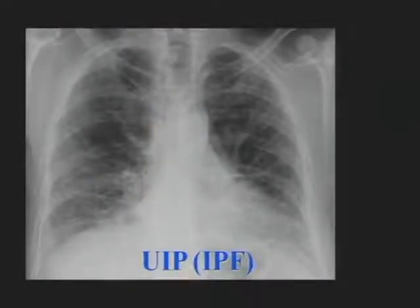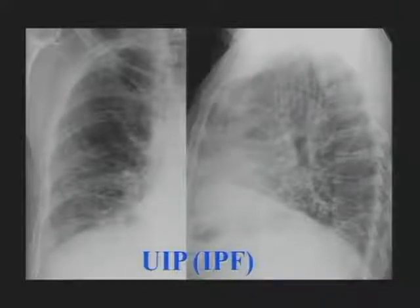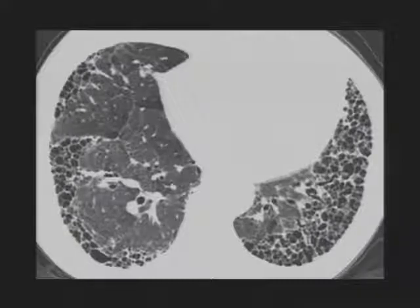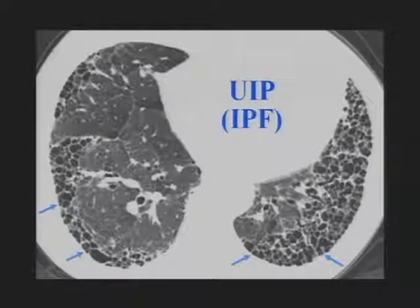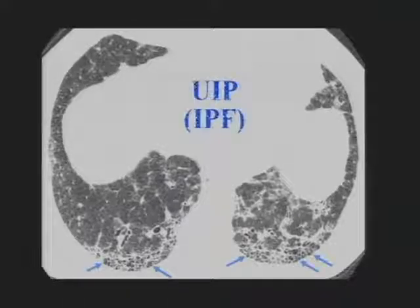This is the plain film appearance of UIP-IPF: decreased lung volumes, small-looking lungs, and increased reticular opacities at the lung bases. The lateral view shows reticulation predominating at the bases and posterior costophrenic angle. Another example of honeycombing on high-res CT shows black holes less than a centimeter in diameter, occurring in clusters and layers with thick recognizable walls — a definitive example in a patient with UIP-IPF. Another example shows posterior lower lobe predominance of reticulation, traction bronchiectasis, and a little honeycombing — again UIP-IPF.